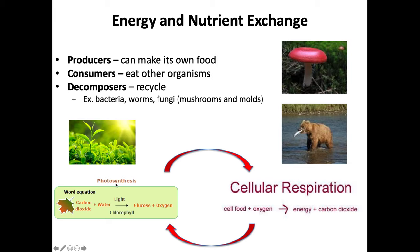Photosynthesis — 'photo' means light, 'synthesis' means to make. Plants take carbon dioxide from the atmosphere and water, whether given by us or from rainfall, and then use energy from sunlight to convert these molecules and make their own food in the form of glucose, which is a sugar. In the process of photosynthesis, they make a byproduct — oxygen gas — and release it into the atmosphere. We then inhale that oxygen gas and go through a process called cellular respiration.